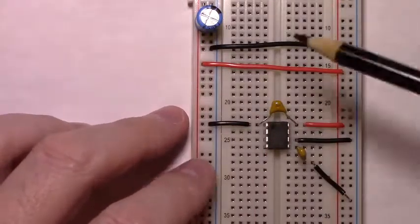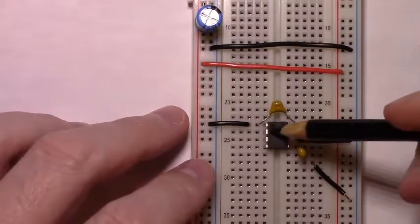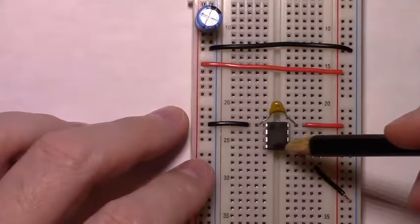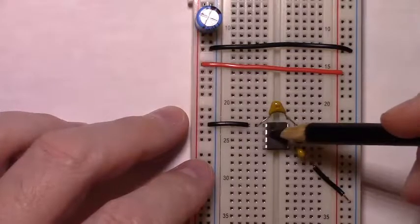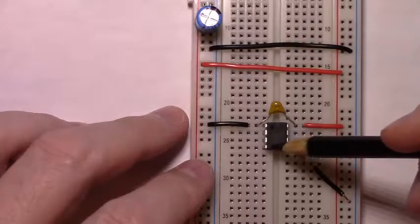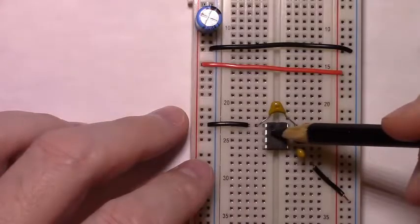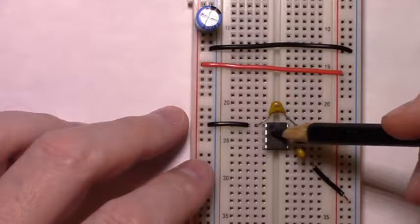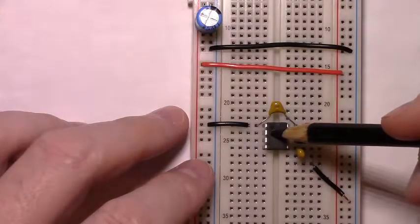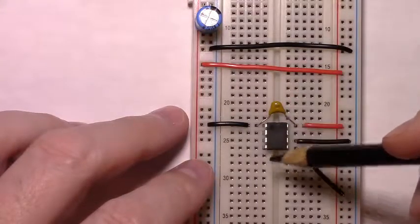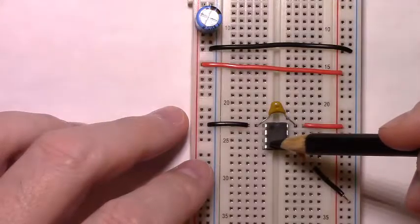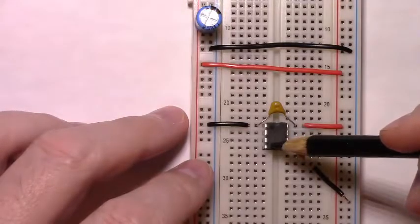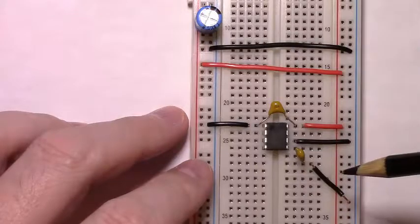One for pin 2, the trigger pin, and one for the reset pin, pin 4. This will keep the trigger pin, when nothing is happening, no buttons are being pushed, pulled high. The same will be happening for reset, which is necessary to pull reset high in order to output a high voltage.